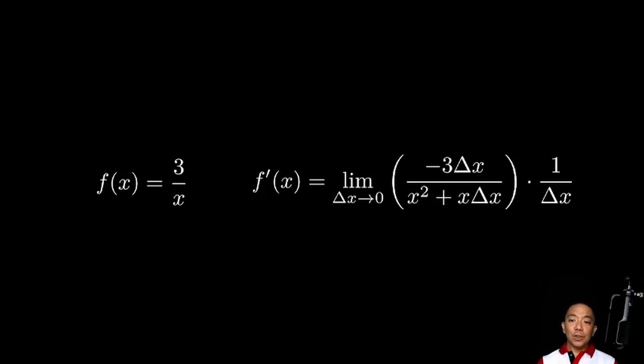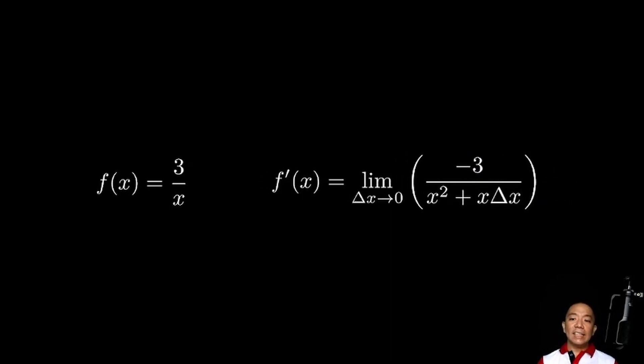Taking a look at this expression, meron tayong delta x sa numerator at delta x dun sa factor natin na 1 over delta x. So, naturally, they can cancel each other out and what we'll have is this, the limit as delta x approaches 0 of negative 3 all over x squared plus x times delta x.